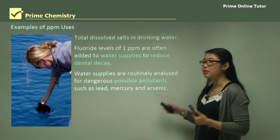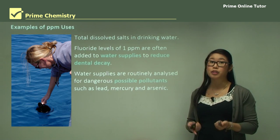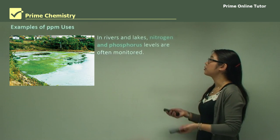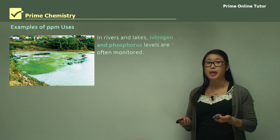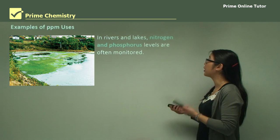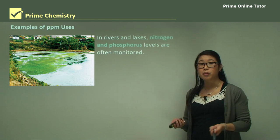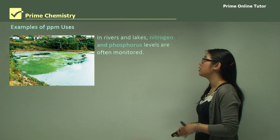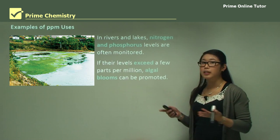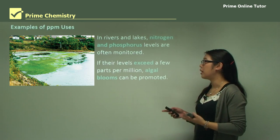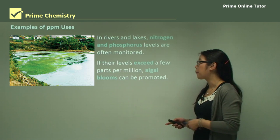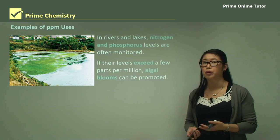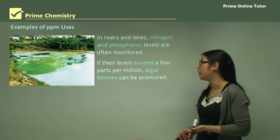We also look at rivers and lakes for nitrogen and phosphorus, because of eutrophication. If these levels exceed a certain number of parts per million — quite a low number — we can get algal blooms, which choke the waterways and cause death to a lot of aquatic life.